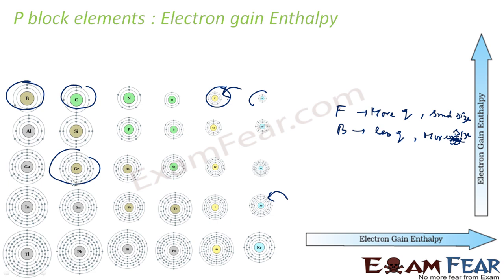Size plays a critical role here. In the case of Fluorine vs Bromine, both charge and size were favoring Fluorine. But in the case of Carbon vs Germanium, only size is the deciding factor. Germanium has less tendency to attract electron as compared to Carbon because of its larger size. So if you go up the group, the tendency to attract electron increases, and the electron gain enthalpy increases.